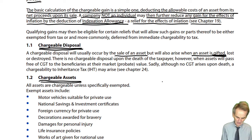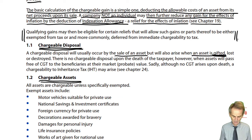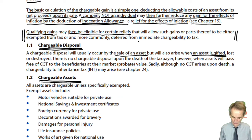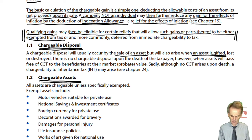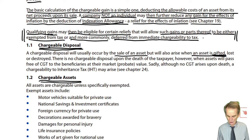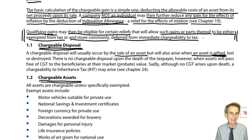Qualifying gains may then be eligible for certain reliefs that will allow such gains, or sometimes parts thereof, to be either exempted from tax — which is most unusual — or, more commonly, deferred from immediate chargeability to tax. You now know one of the principal deferral reliefs, at least by name: gift relief, available to us and discussed in Chapter 14.